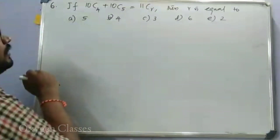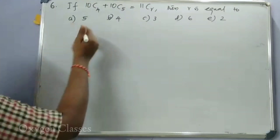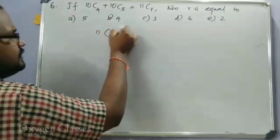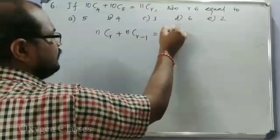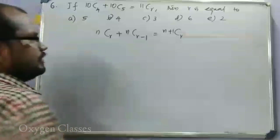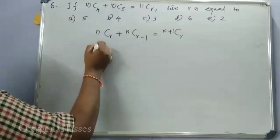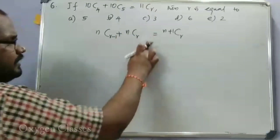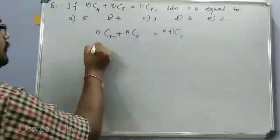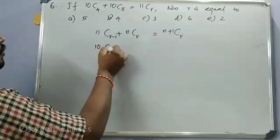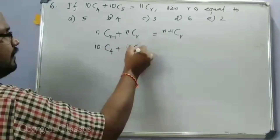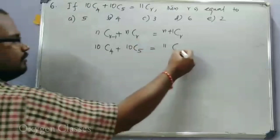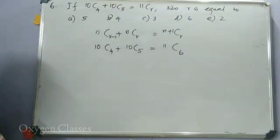We directly apply the formula NCR plus NC(R-1) equals N+1CR. So 10C4 plus 10C5, matching the form NC(R-1) plus NCR, gives 11C(R+1), where R equals 5, so R plus 1 equals 6.